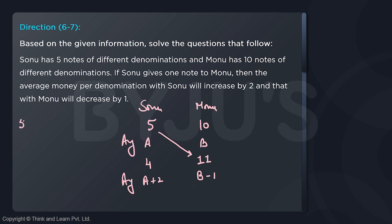Previously the total money with Sonu was 5A and with Monu was 10B. Now the total money with Sonu is 4A plus 8, and with Monu is 11B minus 11. The total money with them should be equal because ultimately money just went from one person to the other — the total money would not change.